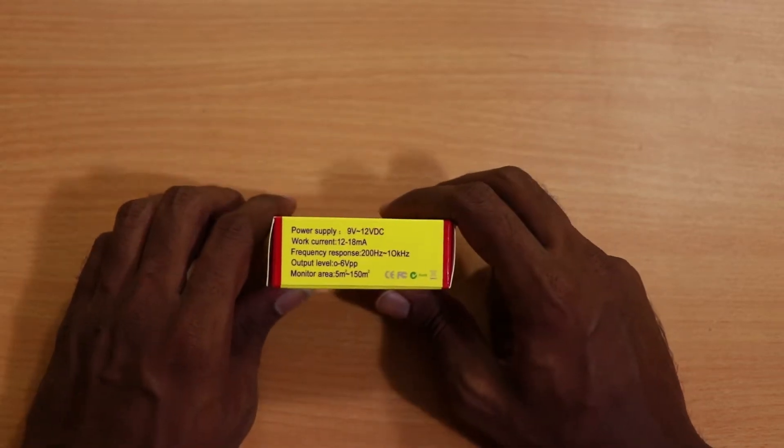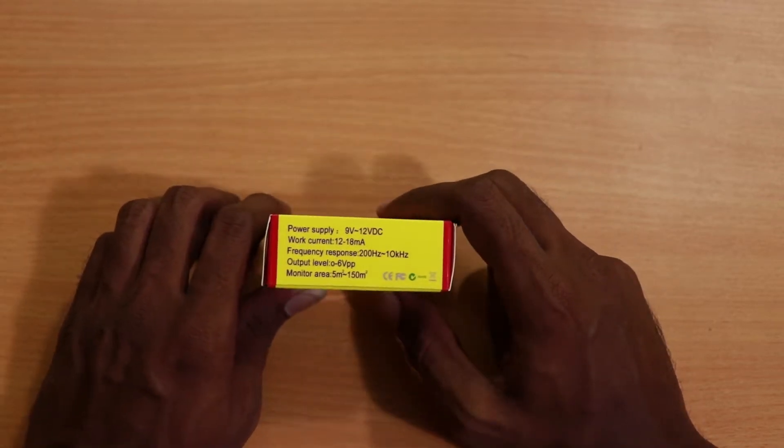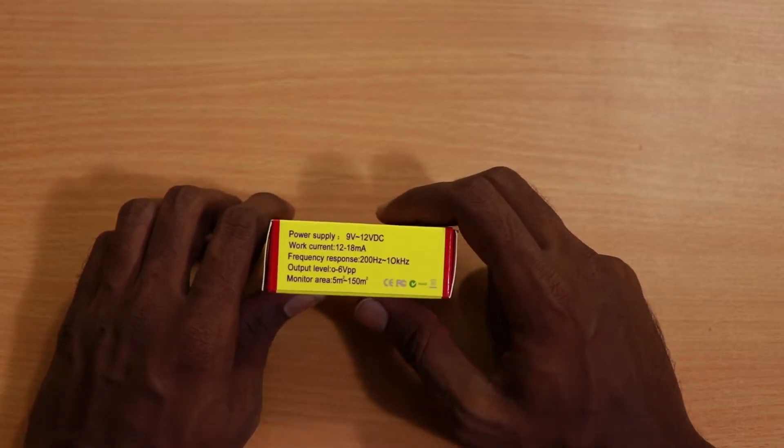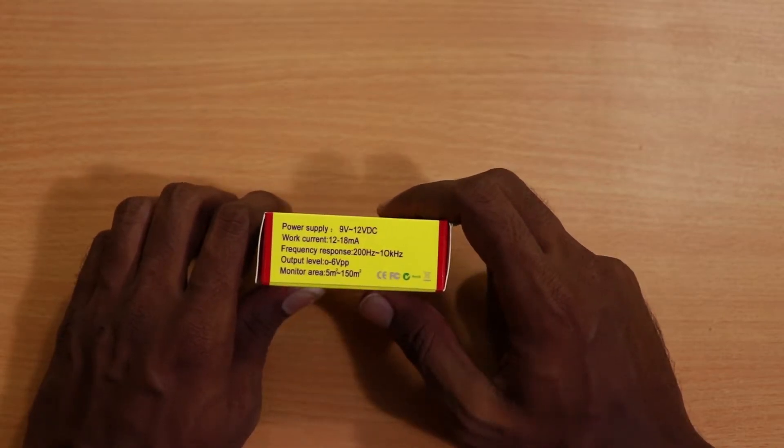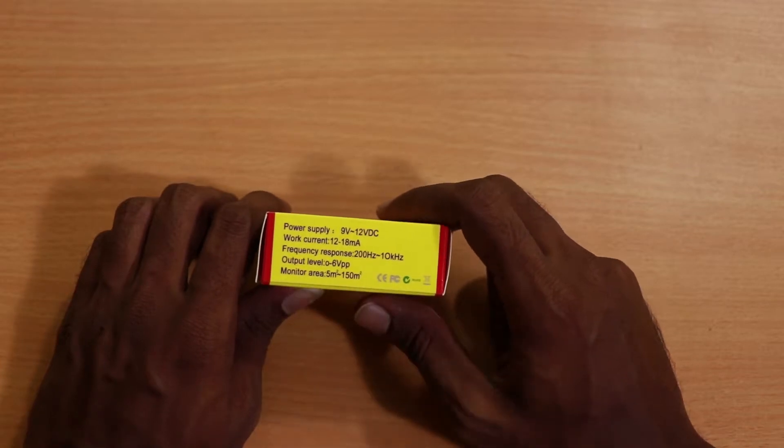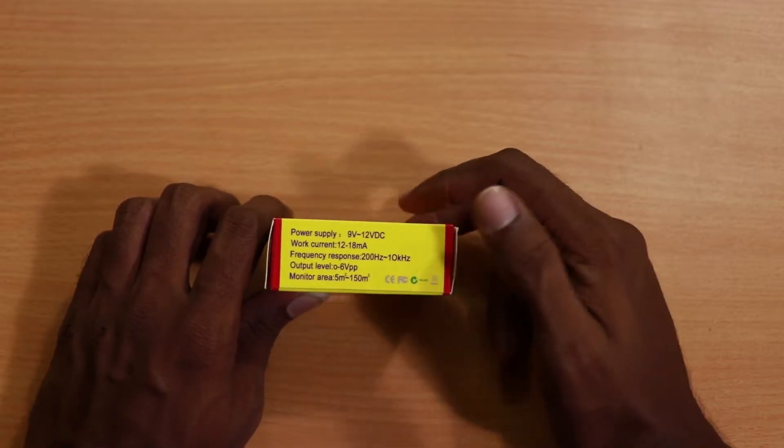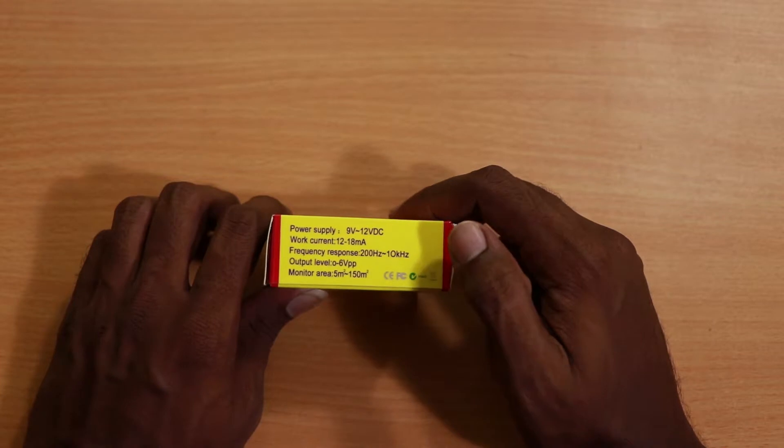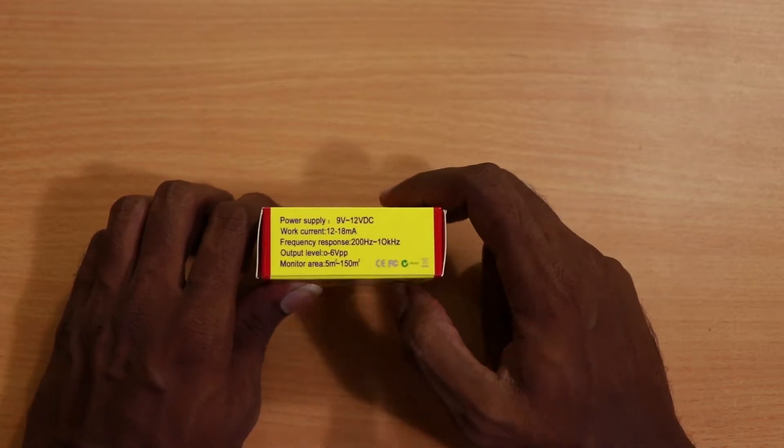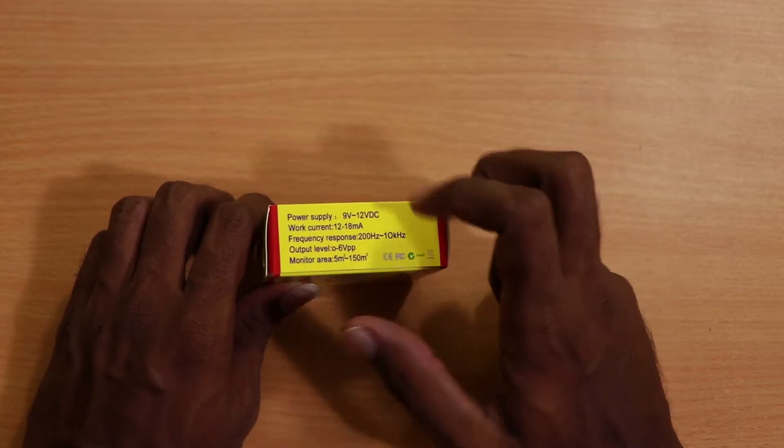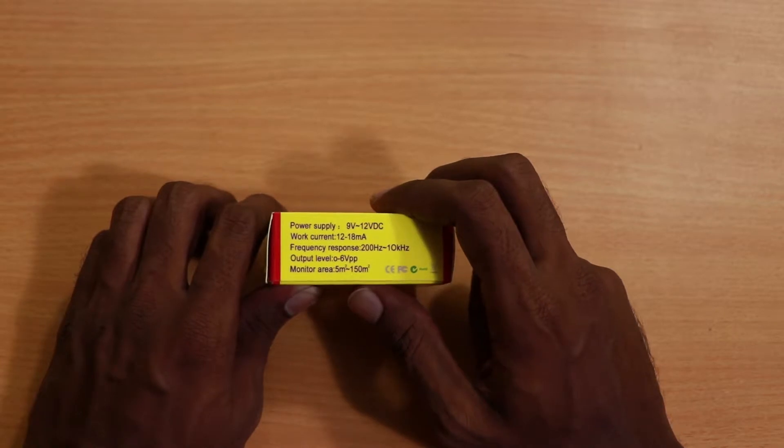Here are some specifications. You can see it takes 9 volt to 12 volt direct current, and the frequency response is from 200 Hertz to 10 kilohertz. And the monitoring area is from 5 meter square to 150 meter square.